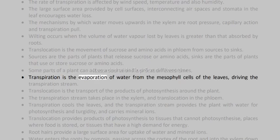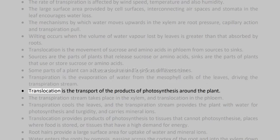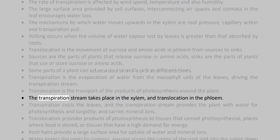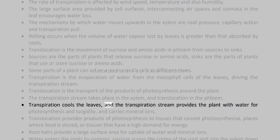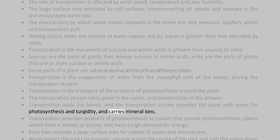Transpiration is the evaporation of water from the mesophyll cells of the leaves, driving the transpiration stream. Translocation is the transport of the products of photosynthesis around the plant. The transpiration stream takes place in the xylem and translocation in the phloem. Transpiration cools the leaves; the transpiration stream provides the plant with water for photosynthesis and turgidity, and carries mineral ions.